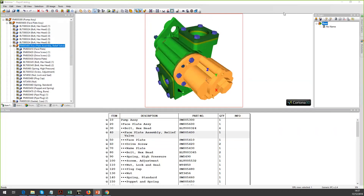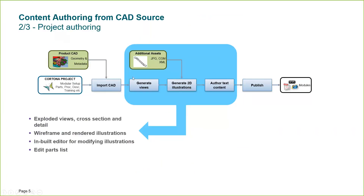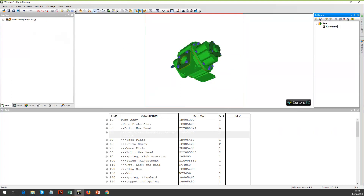Let's roll on to the next part and go back to the slide deck. We've done the import, now we're going to move to actually creating content — generating views of the product, creating 2D illustrations, and authoring the text. You could bring in existing assets, but typically in Cortona we produce everything off the back of the CAD data so that everything updates correctly. So let's create exploded views, do some illustrations, and edit the parts list table. I'll create my first sheet called 'Assembled' and switch on the DPL rows.